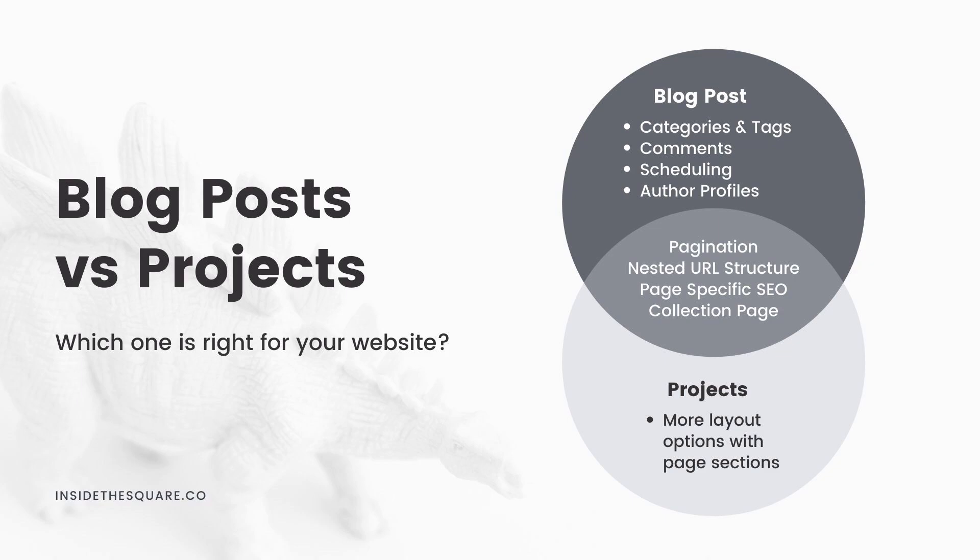Blogs can also have comments, they can be scheduled in advance, and they have author profiles — that is unique to blogs alone in Squarespace 7.1. Blogs have pagination, that nested URL structure we talked about, and also specific SEO for the individual post. So those are the main things to think about when creating a blog: categories and tags, comments, scheduling, author profiles, pagination, nested URL structure, post-specific SEO, and they are a collection page.